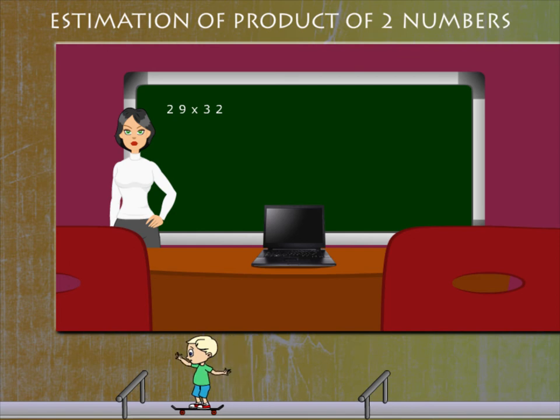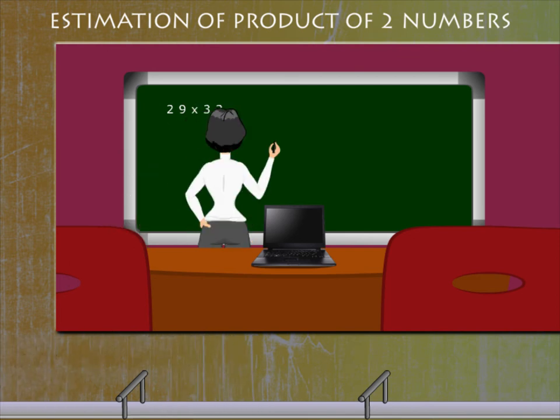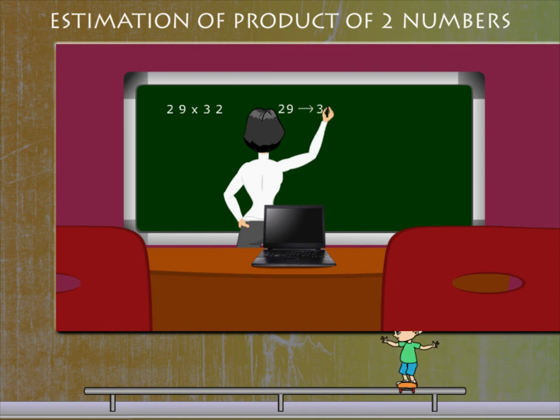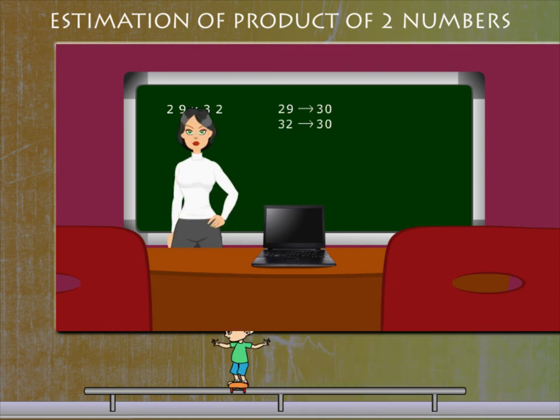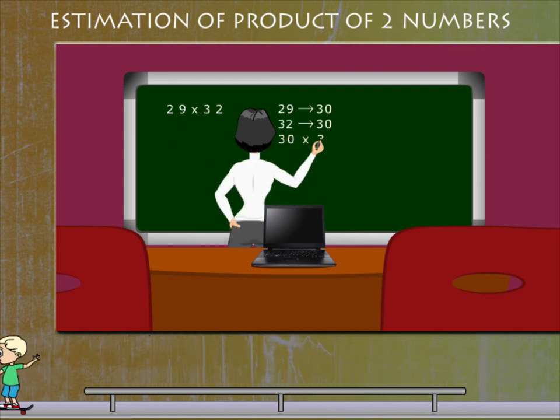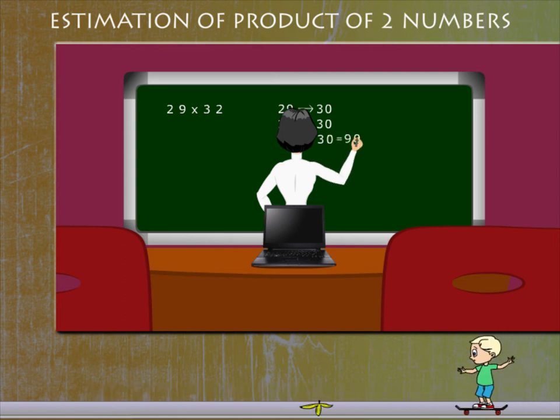Lucy is not interested in the exact product but wants to estimate. So she rounds 29 to 30, then multiplies 30 × 30.